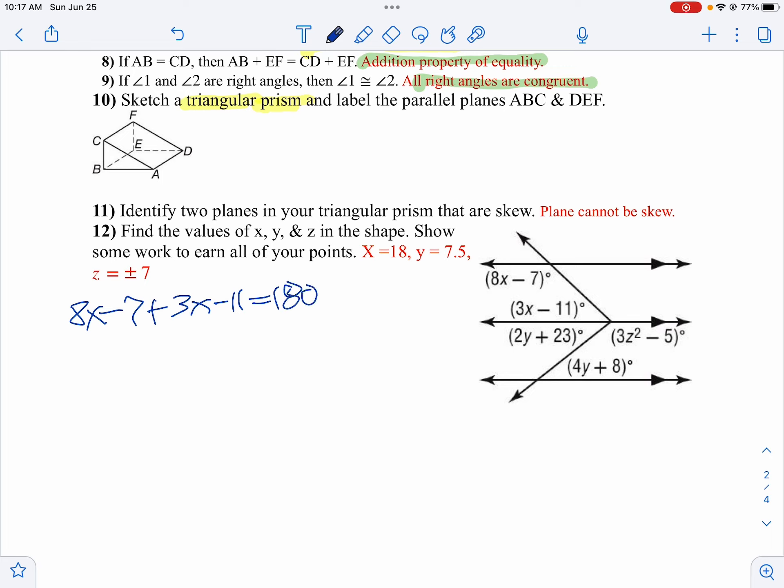Now we're going to solve for x by combining like terms. 8 plus 3 is 11x, and then negative 7 minus 11 is negative 18 equals 180.